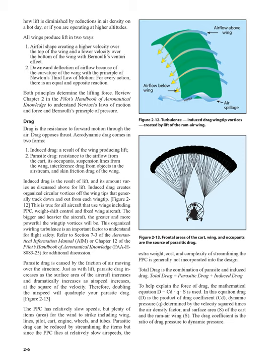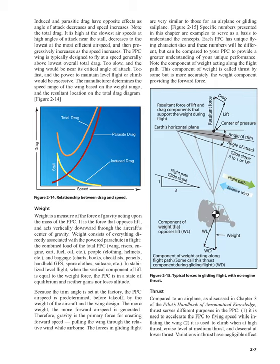Total drag is the combination of parasite and induced drag: total drag equals parasitic drag plus induced drag. The mathematical equation D = CD · Q · S is used, where D is drag, CD is the drag coefficient, Q is dynamic pressure (velocity squared times the air density factor), and S is the surface area of the cart and Ram air wing. Induced and parasitic drag have opposite effects as angle of attack decreases and speed increases. Total drag is high at the slowest airspeeds near the stall, decreases to the lowest at the most efficient airspeed, and then progressively increases as speed increases. The PPC wing is typically designed to fly at a speed generally above the lowest overall total drag.